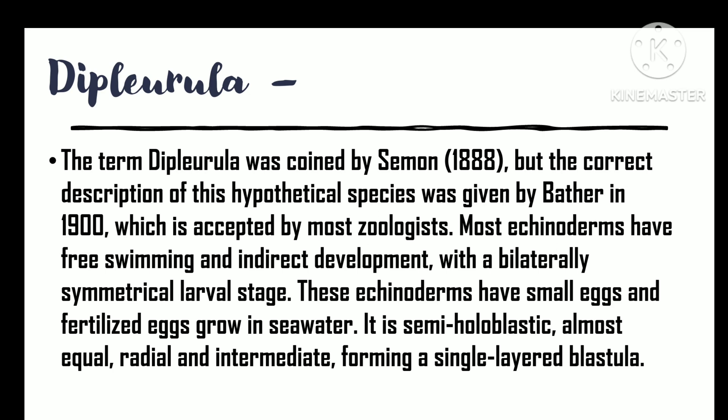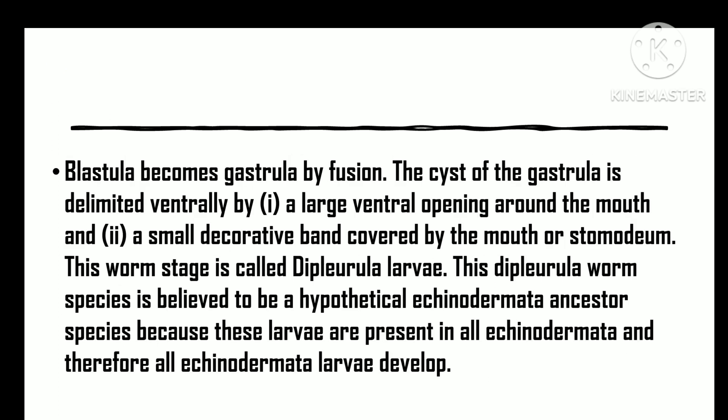The blastula then transforms into a gastrula by evagination. The cilia of the gastrula are restricted to a large pre-oral band present around the mouth on the ventral side and a small adoral band lining the mouth or stomodeum. This larval stage is called the Dipleurula larvae.